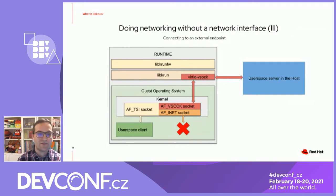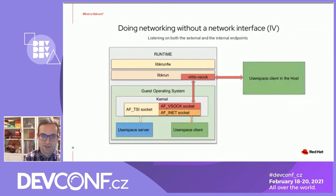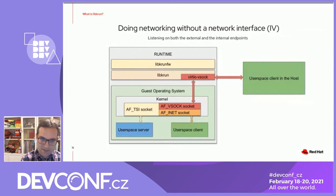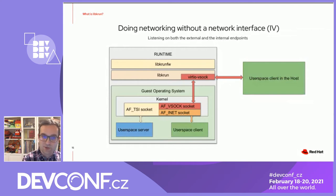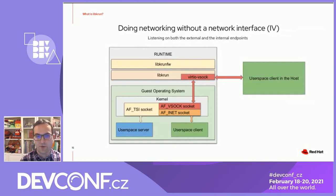What happens if instead of having a user space client using the TSI socket, we have a user space server? Once the user space server starts listening on the TSI socket — which again is not aware it's a TSI socket — the TSI socket will implicitly start listening on both the INET and the VSOCK personalities at the same time. If a connection is received through the INET personality, the new socket created to handle that connection will be a TSI socket where the INET personality is the primary one. If a connection is received through the VSOCK personality, the TSI socket created will be one with the VSOCK personality as the primary one.